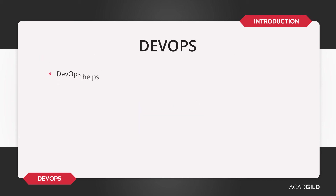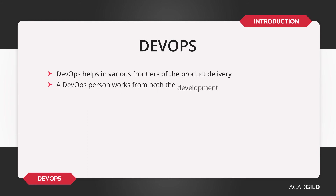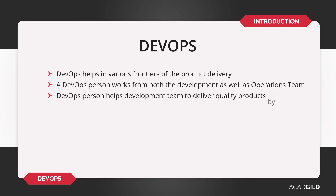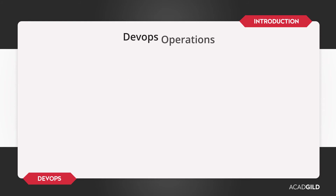DevOps helps in various frontiers of product delivery. When you are in DevOps, you are supposed to work with both the development team and the operations team to ensure that the development teams are capable of producing quality products. To accomplish product quality, perform the following actions.